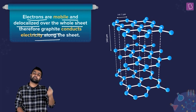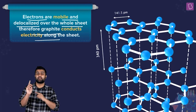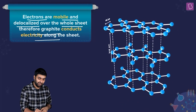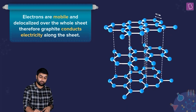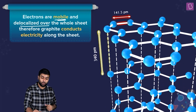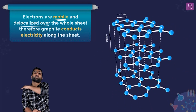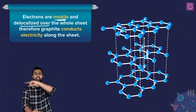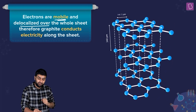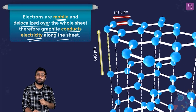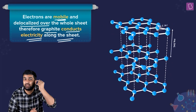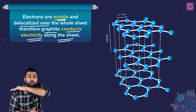As we've studied in organic chemistry, wherever there is conjugation, there can be delocalization. So the pi electrons are mobile and delocalized over the whole layer. Because of this conjugation and delocalization, graphite conducts electricity along the sheets.